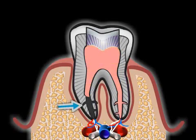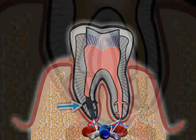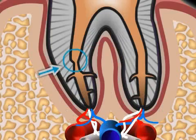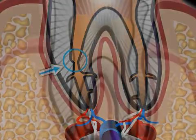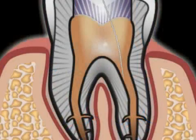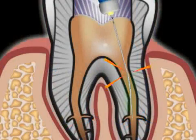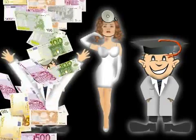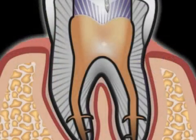The reasons for not filling down to the tip of the root are manifold: severely curved canals, the breaking of a root canal instrument, an unmotivated practitioner, an unskilled practitioner, or an inexperienced practitioner.